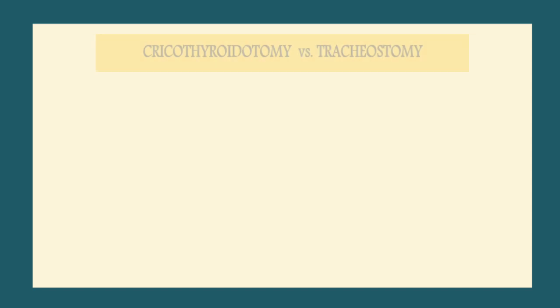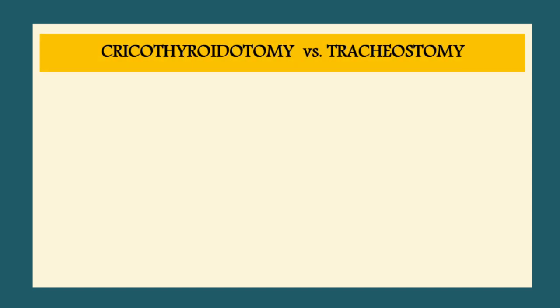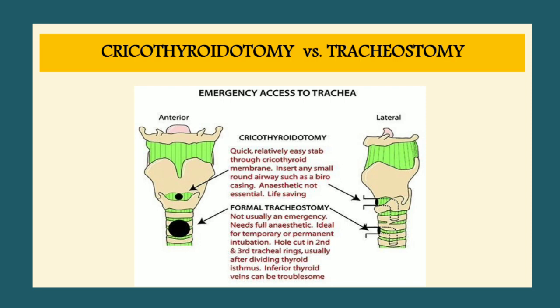Comparing cricothyroidotomy and tracheostomy: cricothyroidotomy is quick and relatively easy, performed through the cricothyroid membrane; any small round airway can be inserted; anesthetic is not essential; it is a life-saving procedure. Formal tracheostomy is not usually an emergency; it requires full anesthetic; it is ideal for temporary or permanent intubation; the hole is cut in the second and third tracheal rings, usually after dividing the thyroid isthmus; inferior thyroid veins can be troublesome.